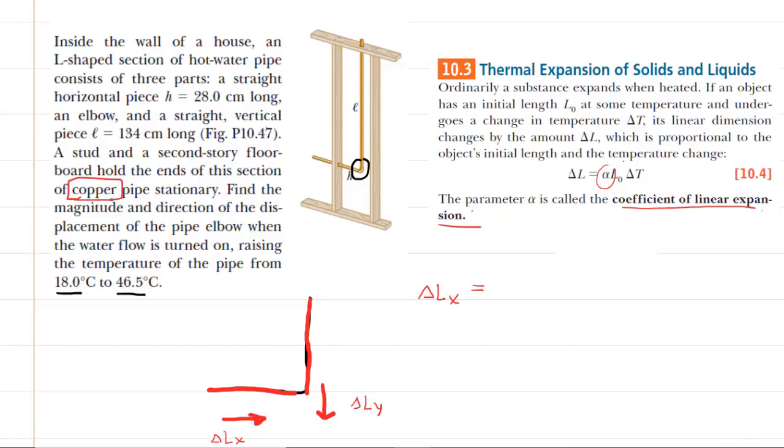So what you'd have to do is look up the value for copper in the reference table for this chapter of the book. And you should obtain a value of 17 times 10 to the negative 6. And this is measured in inverse degrees Celsius. And then you're going to multiply that by the original length of that horizontal section of pipe. And that was given as 28 centimeters. And then you're going to multiply by the temperature change. Now the temperature changes from 18 to 46.5. So what you'll do is take that final temperature of 46.5 and subtract the initial temperature of 18. This is in degrees Celsius.